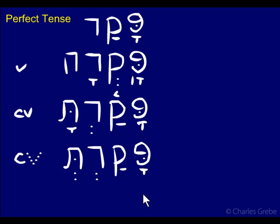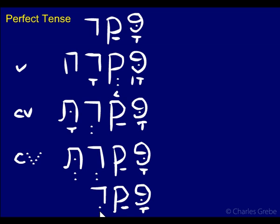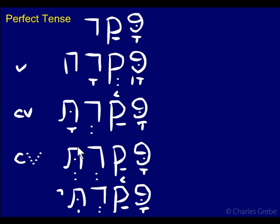Now let's look at the first person — just one form for singular. The ending is -ti, and our stress stays on the middle syllable. So: pa-qad-ti. These three forms — 2MS, 2FS, and 1CS — are nice and normal in terms of how you construct them: use the 3MS form, add the endings, and don't make any reductions anywhere. That's our singular set.